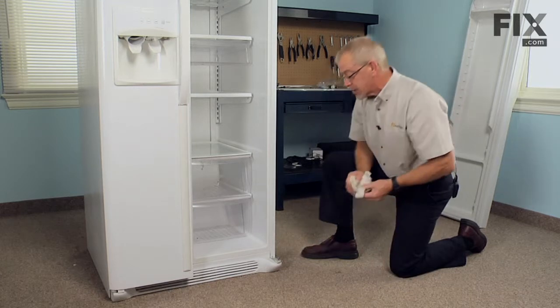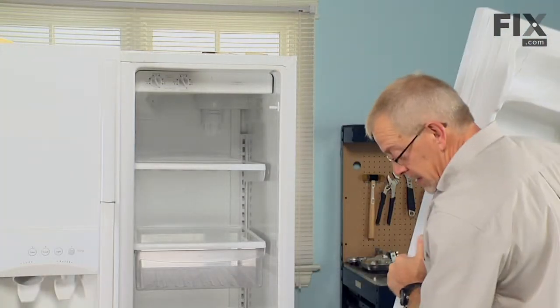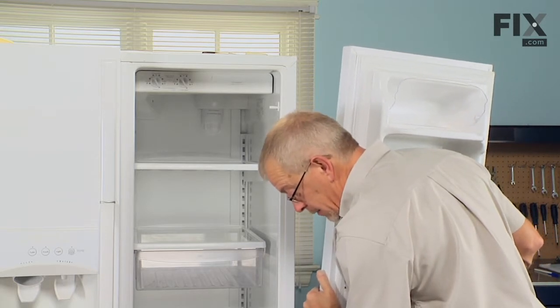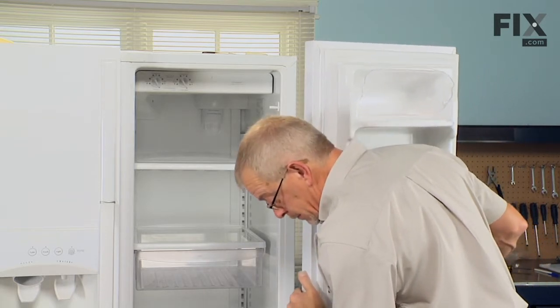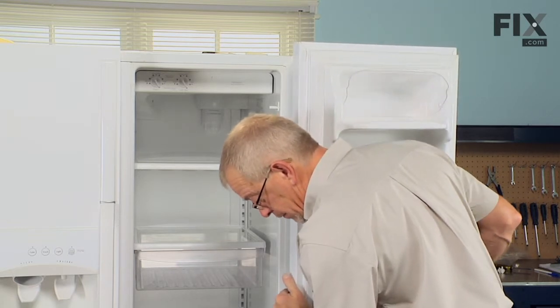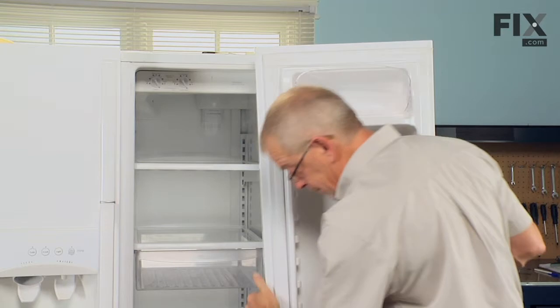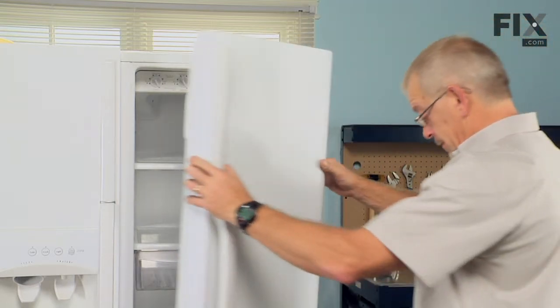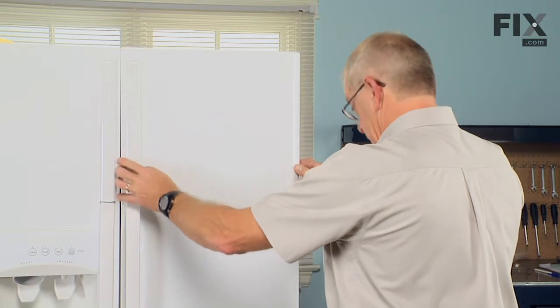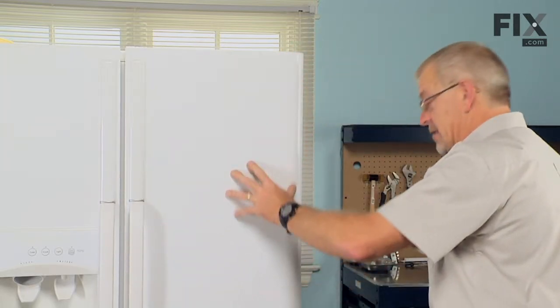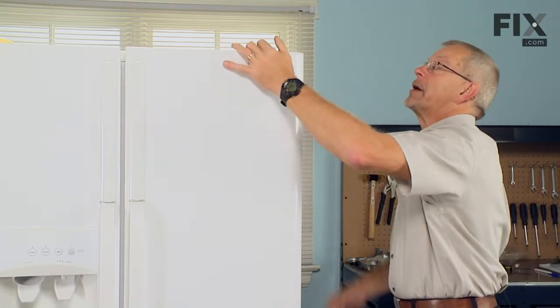Now we're ready to reinstall the door. Simply line up the hinge pocket with the hinge pin, rotate the door into place. The gasket should hold it firmly there but just keep a hand on it to make sure.